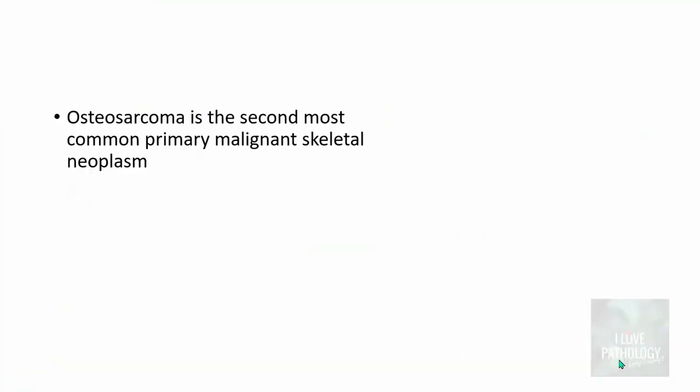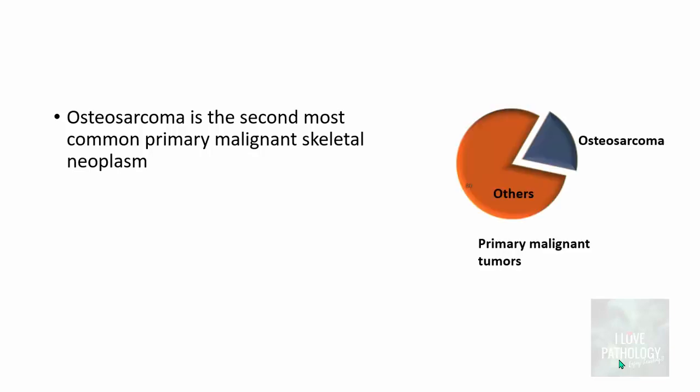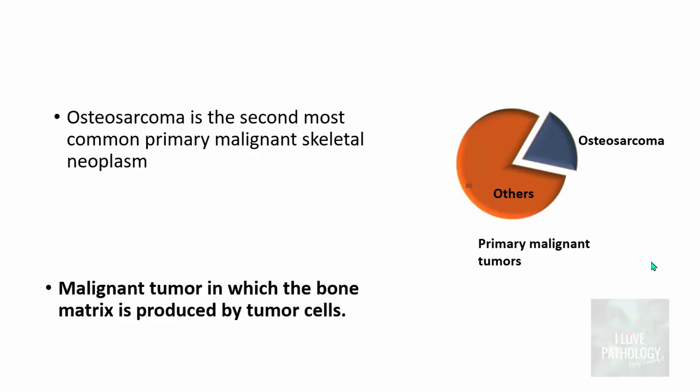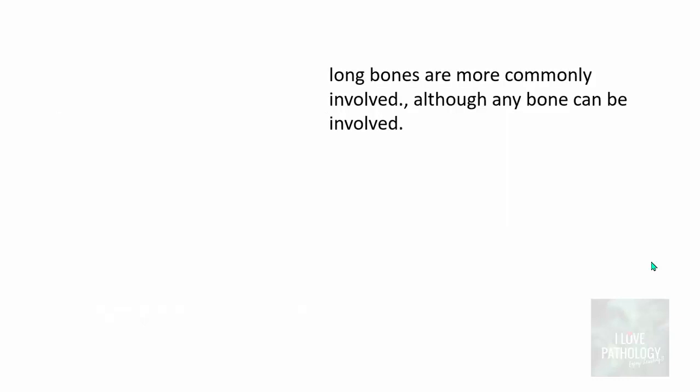Osteosarcoma is a malignant mesenchymal tumor — a malignant tumor of the bone. Osteosarcoma is the second most common primary malignant skeletal neoplasm, accounting for around 20% of all primary malignant tumors of the bone. It is a malignant tumor in which the bone matrix is produced by the tumor cells.